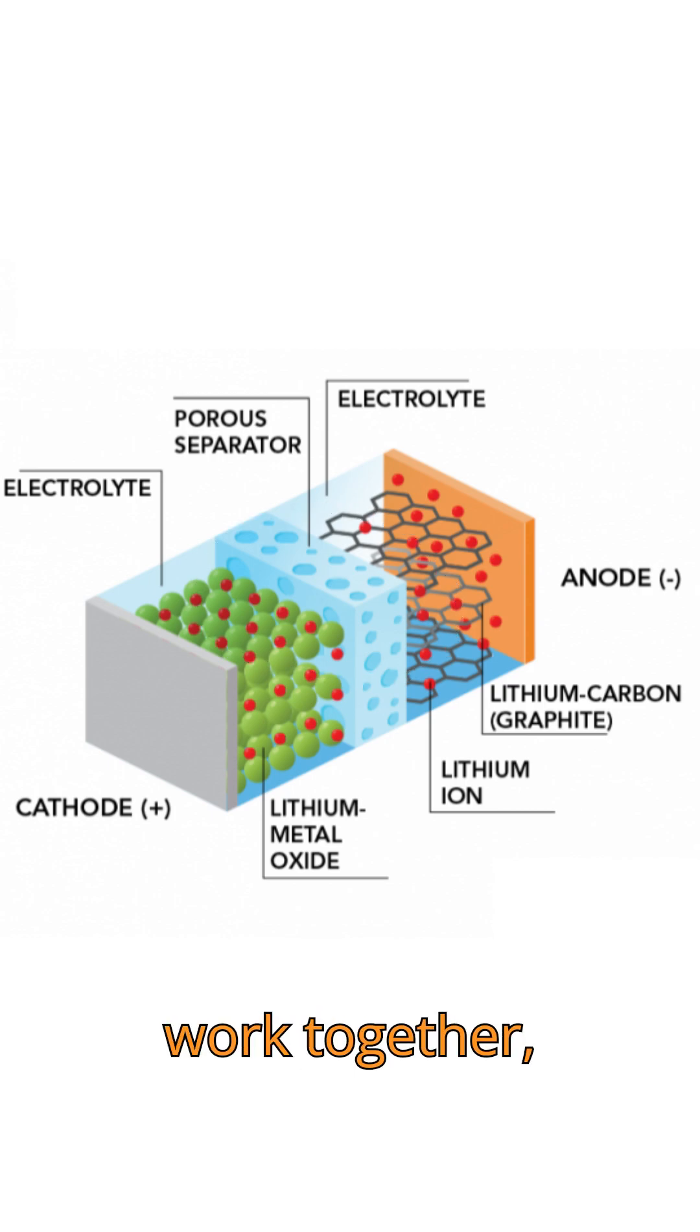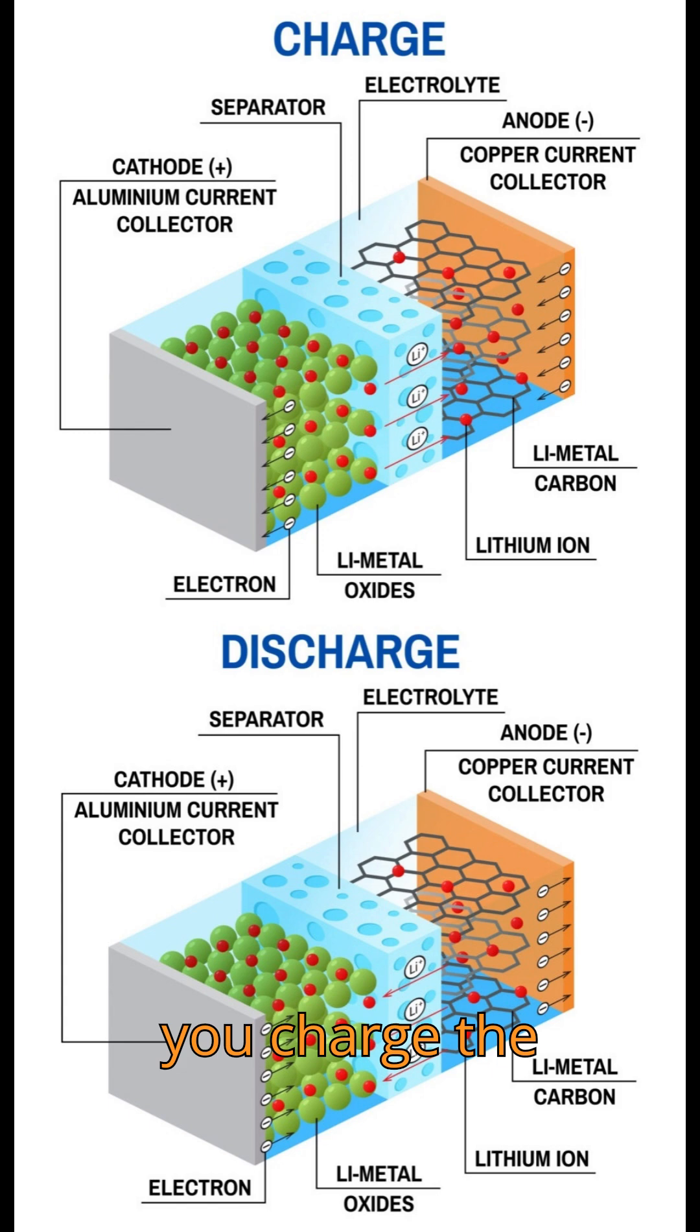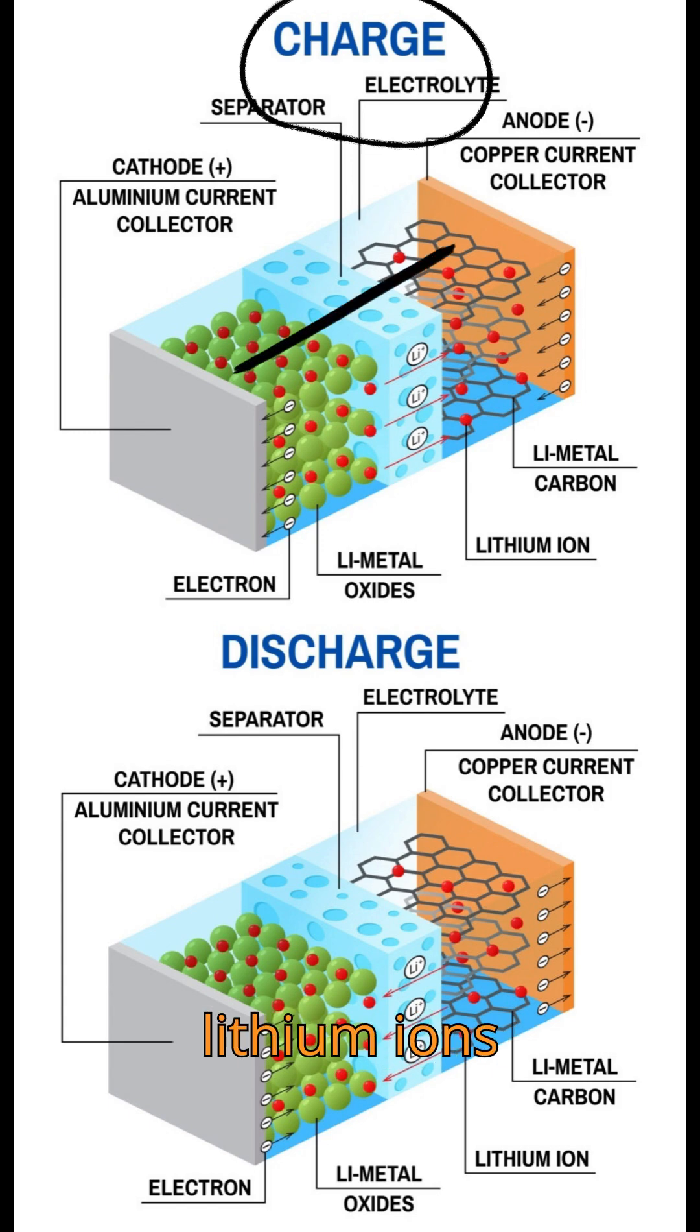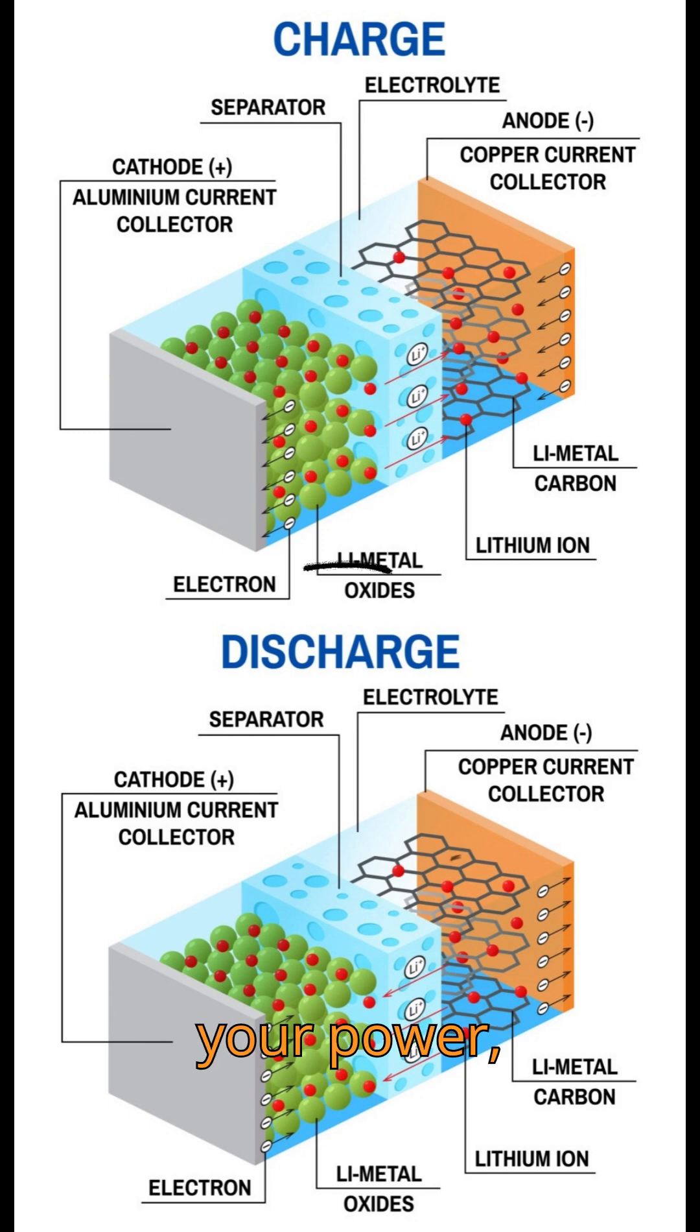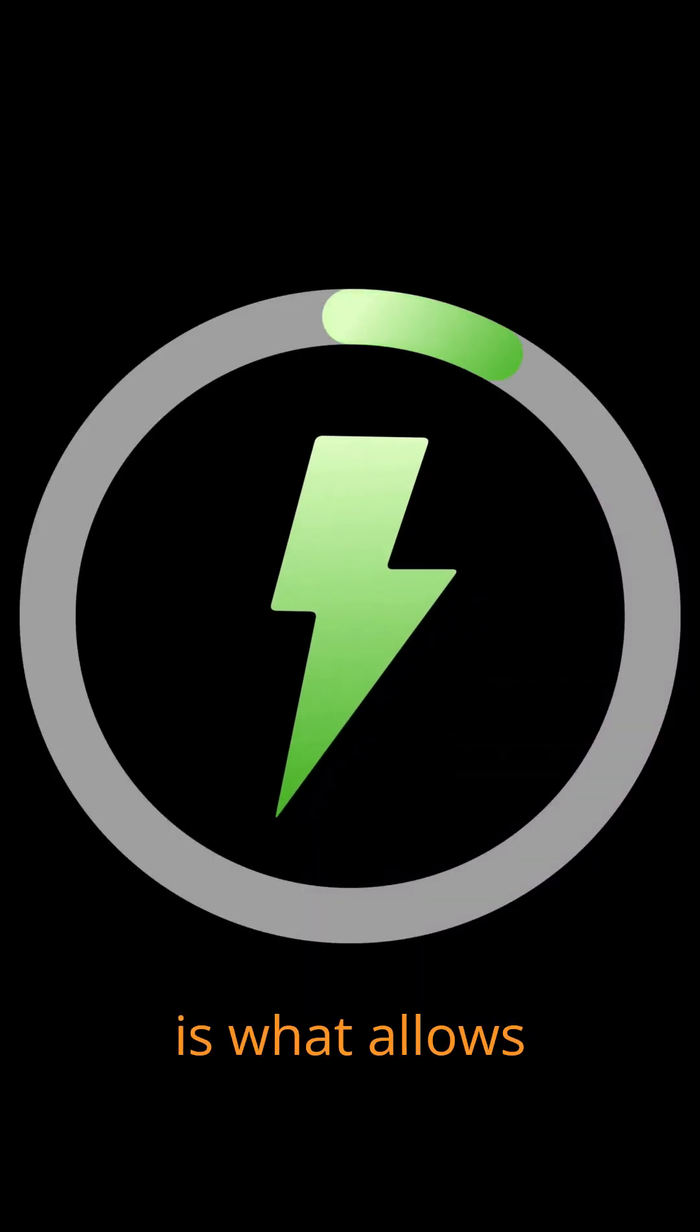When these components work together, the cycle begins. When you charge the battery, electricity pushes the lithium ions to move from the cathode to the anode. When you use your power, the ions move back the other way, generating an electric current. This repeated cycle is what allows you to charge and discharge hundreds of times.